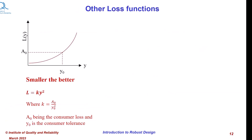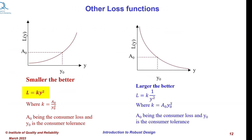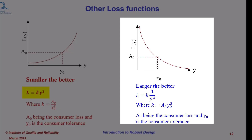The loss function for the smaller-the-better quality characteristic is given by L = ky². Similarly, for the larger-the-better quality characteristic, the loss function is L = k(1/y²).